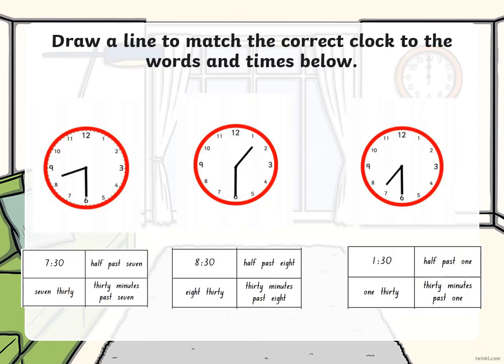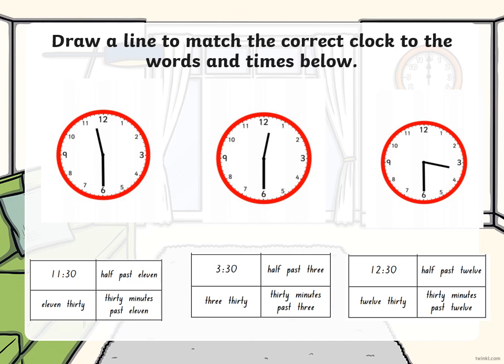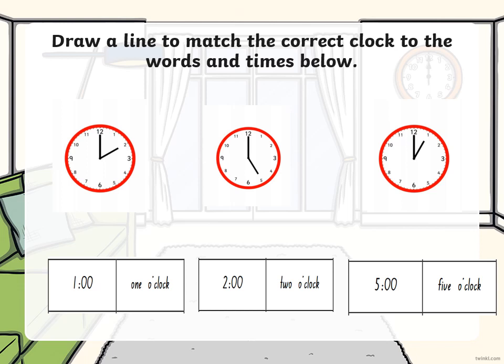Draw a line to match the correct clock to the words and times below. Have a look at the different clocks and see if you can match them correctly by drawing a line. Again, draw a line to match the correct clock to the words and times below — see if you can have a go. Draw a line to match the correct clock to the words and times below.